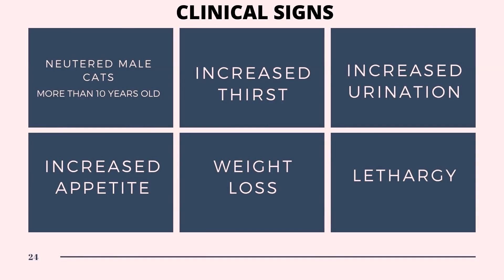Diabetes mellitus affects many different breeds and types of cats. The disease is most often seen in neutered male cats 10 years of age or older. The common clinical signs include increased thirst and urination, increased appetite, and weight loss. Because glucose cannot be utilized by the body, it is almost as if the cat is starving in the midst of plenty.